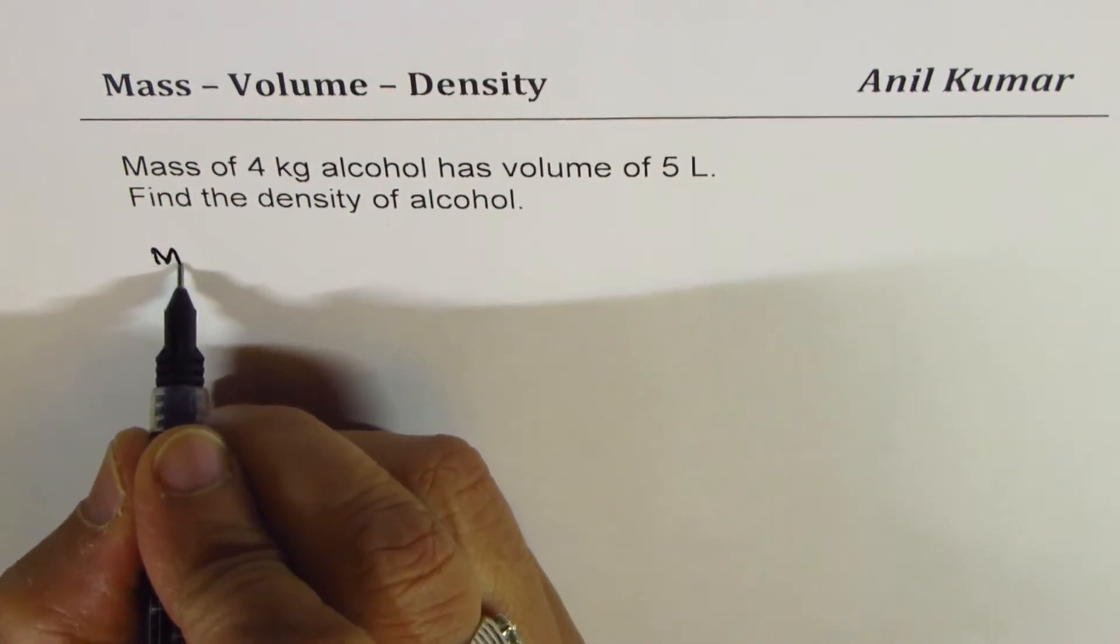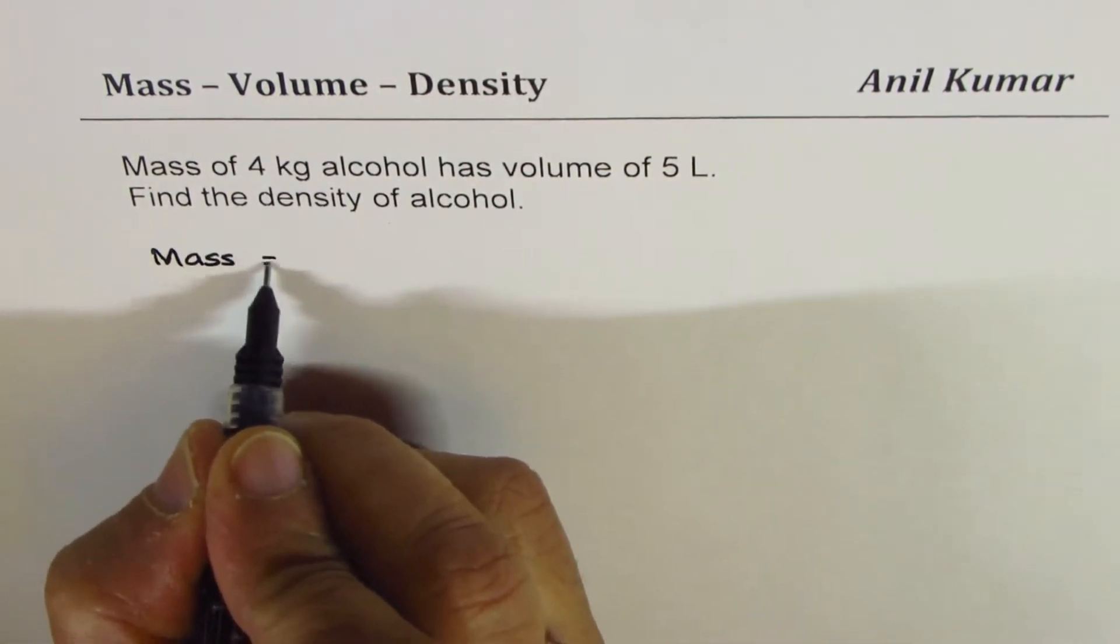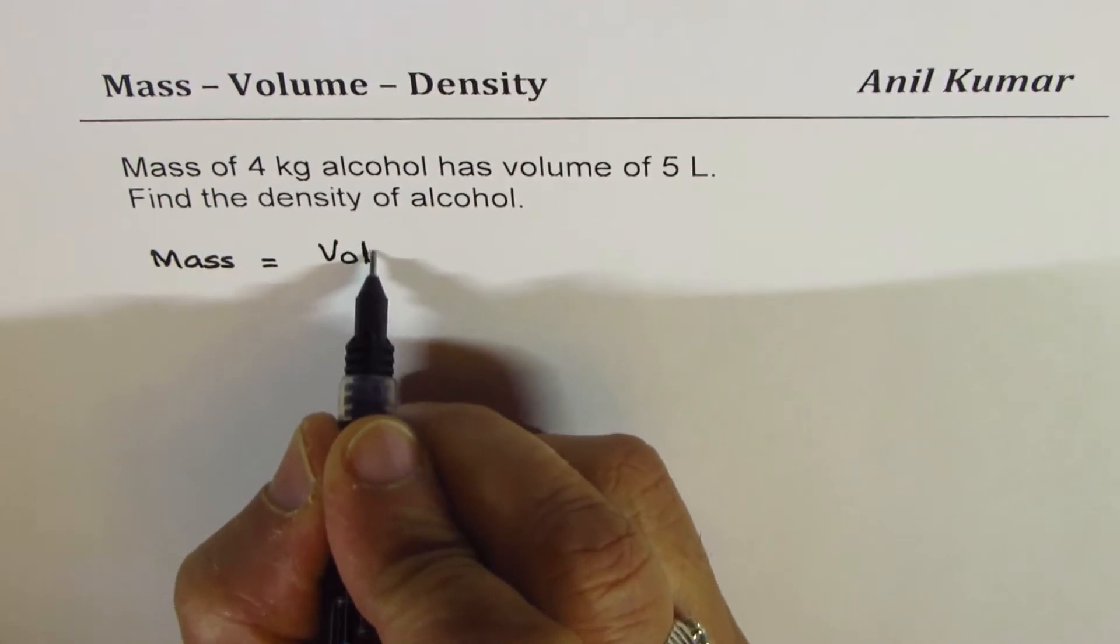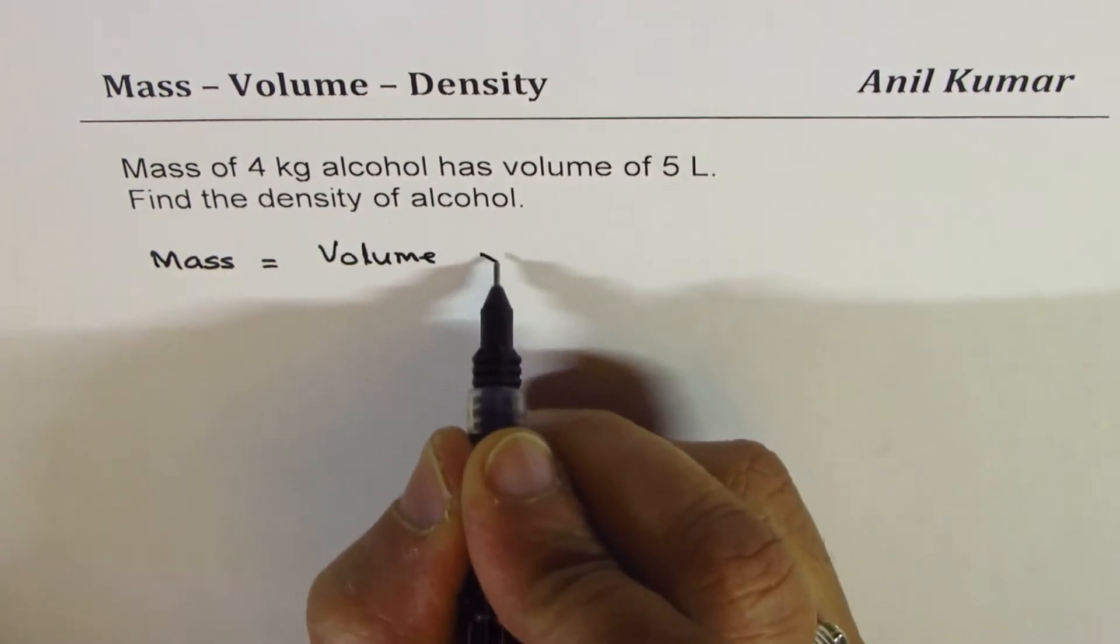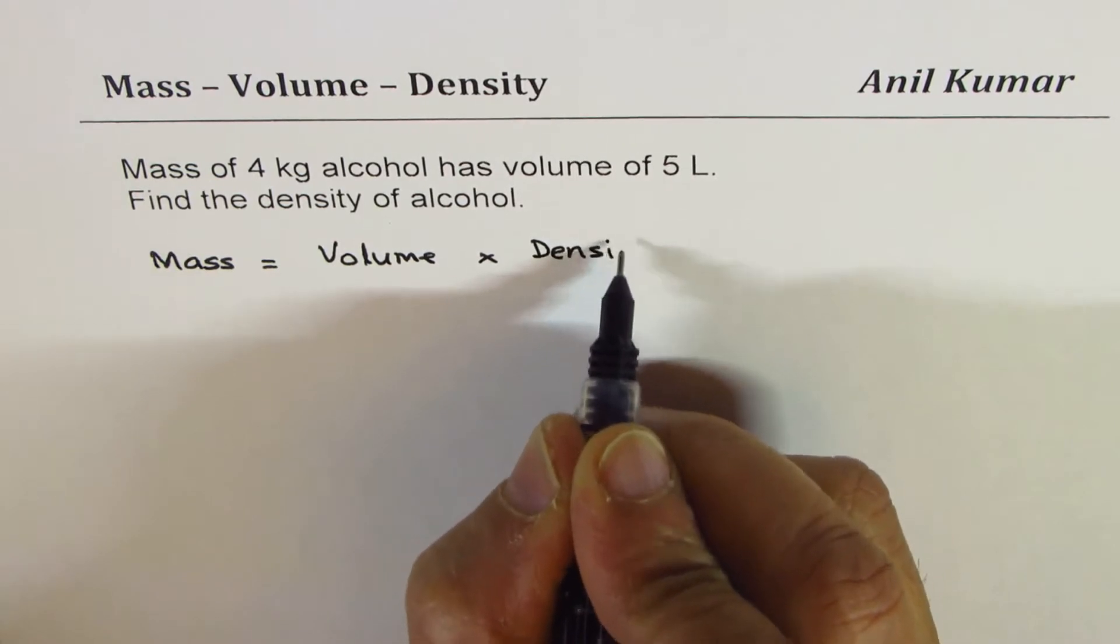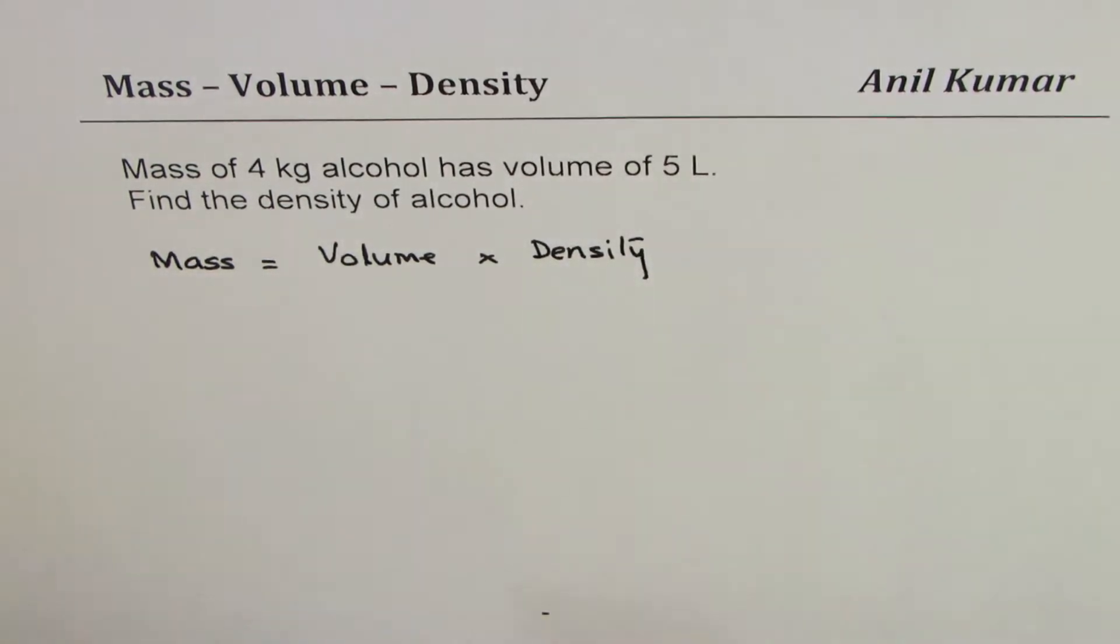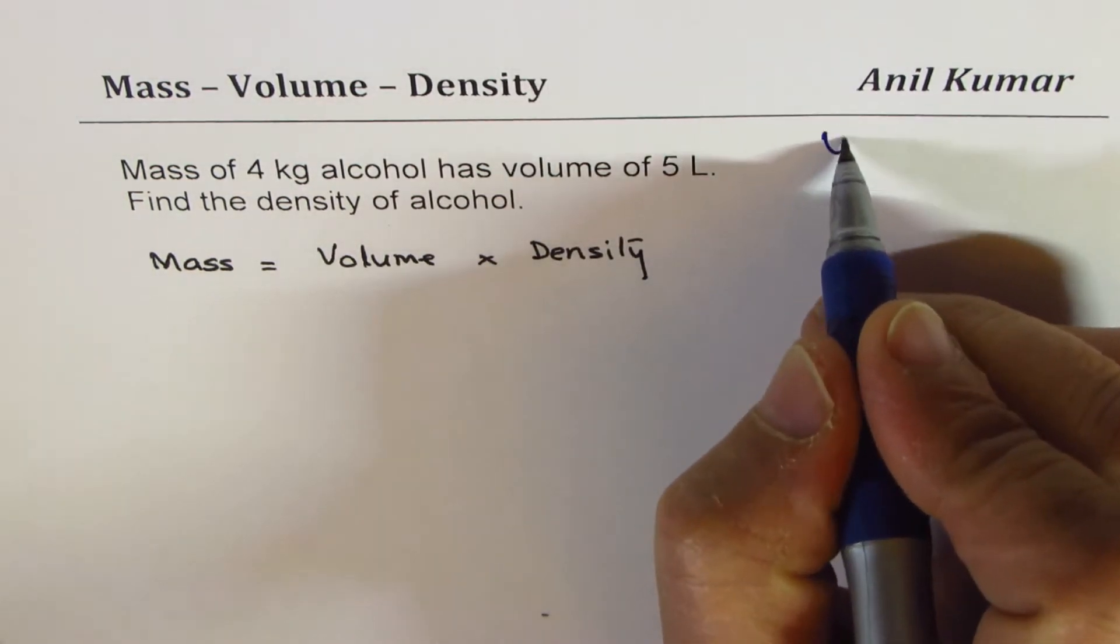Now the relation between mass, volume, and density is that mass is equal to volume times density. So whenever we use this relation we have to take care of units, that is most important. What you have to consider is units, all should be same units.